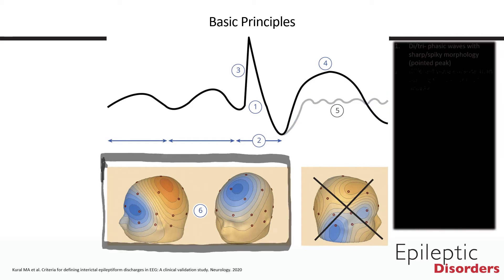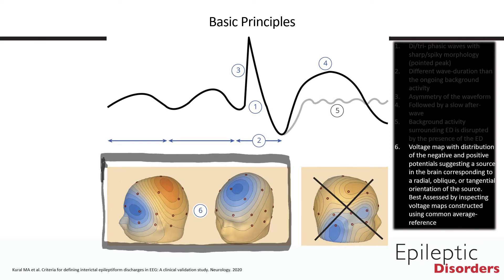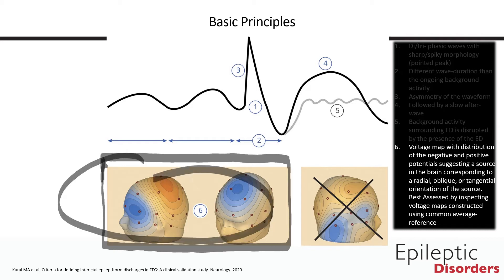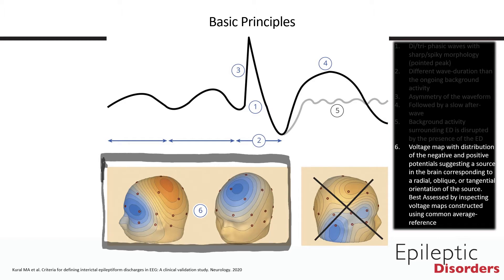The sixth and final criterion is looking for distribution. This can be done through voltage maps looking at the negative and positive potentials that would suggest a source in the brain corresponding to a radial, oblique, or tangential orientation of the source. If no voltage maps are available, the distribution can be assessed through the average reference montage.